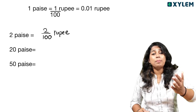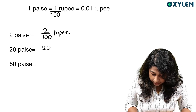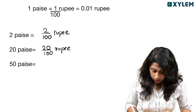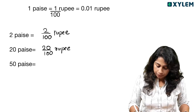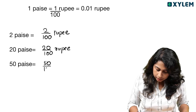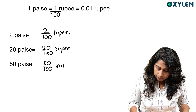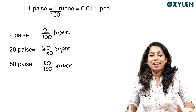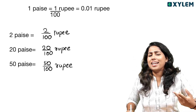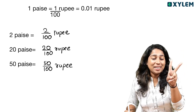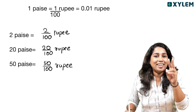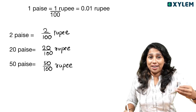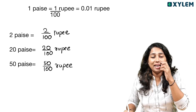20 paise is the same as 20 by 100 rupees. So the price is the same: 2 by 100 rupees. How many zeros are there? 2 zeros. We are going to use a denominator of 10 — 10 to the power of 100. How many decimal places do we go to?